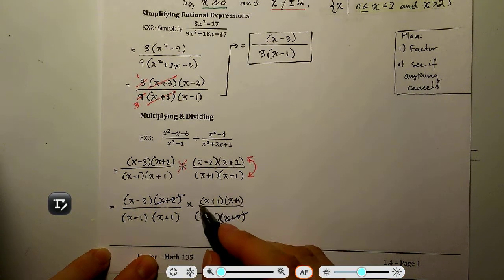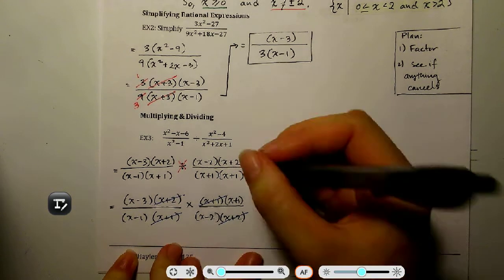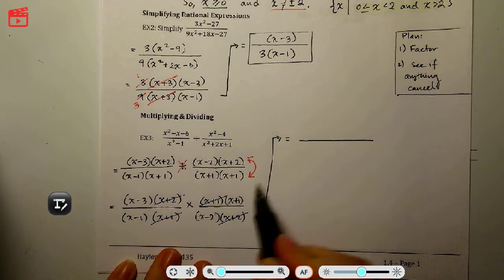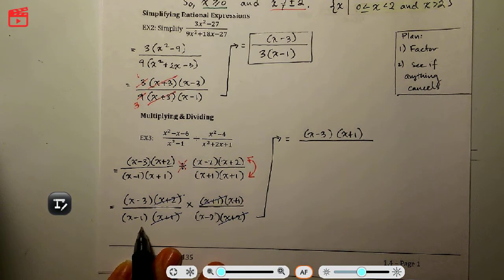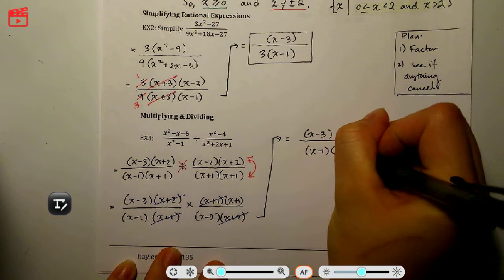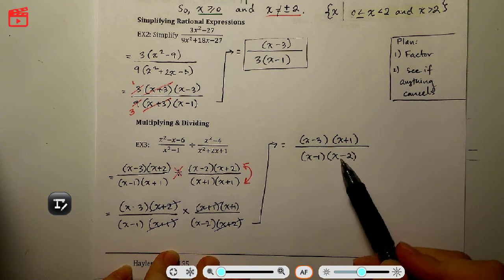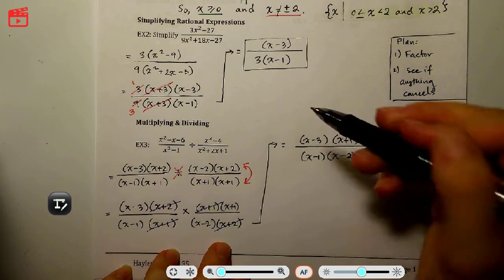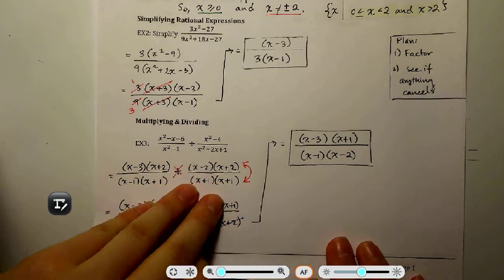After cancelling, multiplying across the top gives (x − 3)(x + 1), and multiplying across the bottom gives (x − 1)(x − 2). Leave the answer in factored form — don't multiply it out — because leaving it factored shows that you confirmed no further cancellation is possible. That is your final answer.